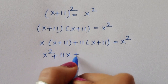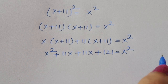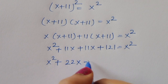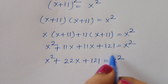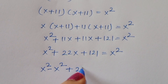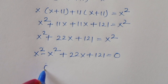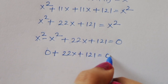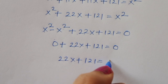Expanding further: x² + 11x + 11x + 121 = x², which simplifies to x² + 22x + 121 = x². Taking x² to the LHS: x² - x² + 22x + 121 = 0, so x² - x² cancels and we get 22x + 121 = 0.